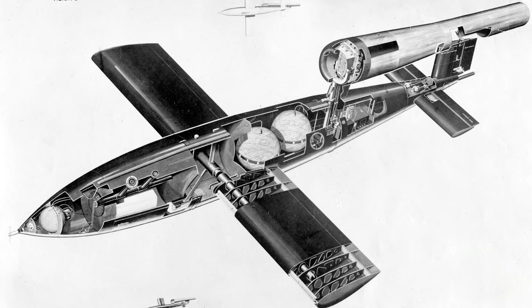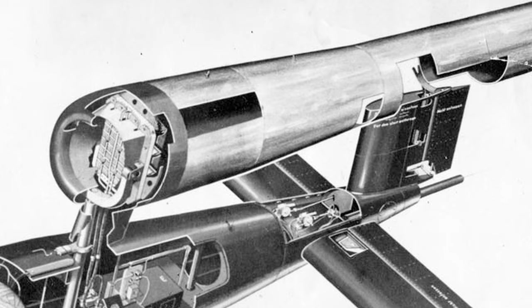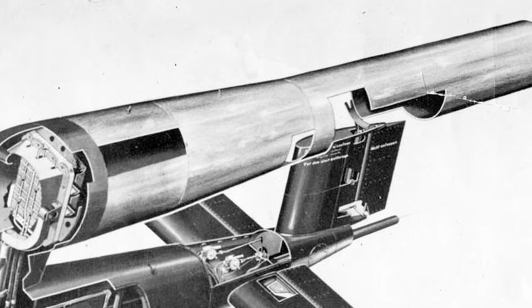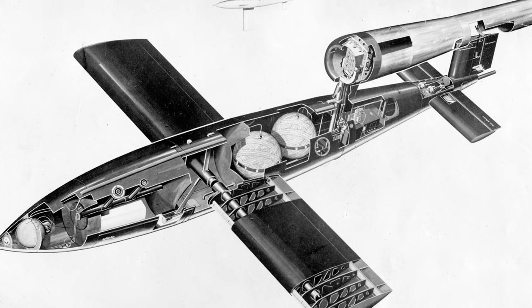The V-1 was 27 feet long with a wingspan of 18 feet. It cruised at 360 miles per hour with an Argus pulse jet engine. This gave the weapon its characteristic buzzing sound and led to it being called the buzz bomb. Total range was approximately 150 miles while carrying a 2,000-pound warhead.